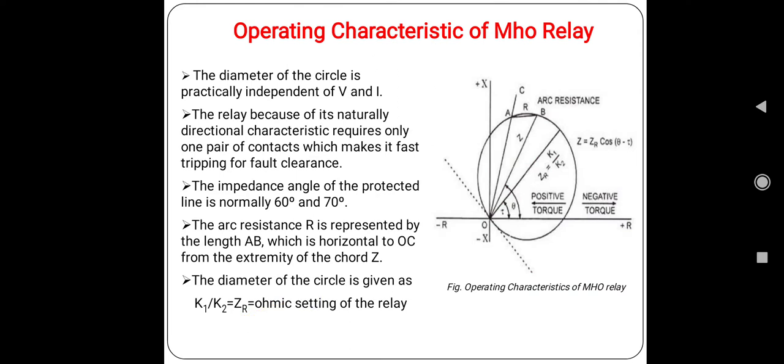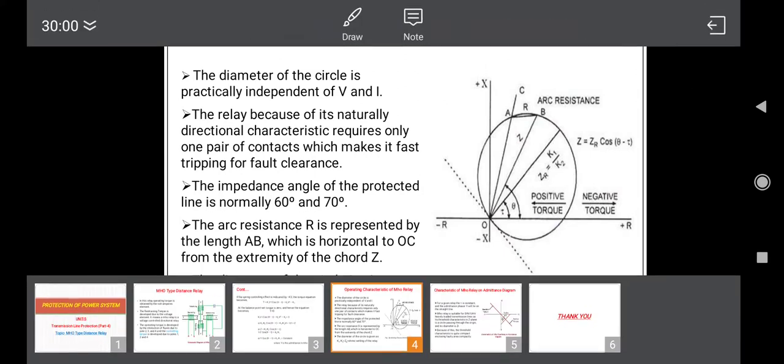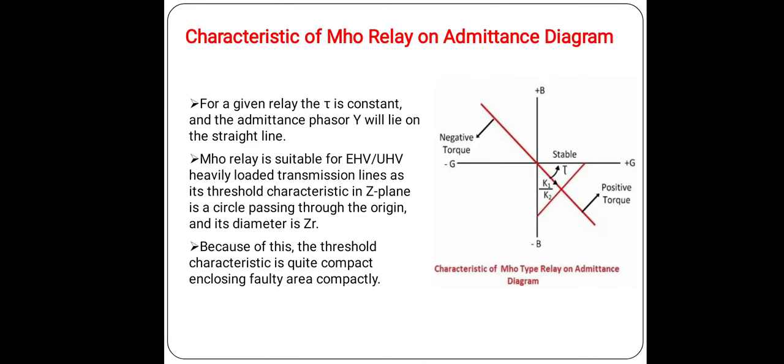Because of this, the threshold characteristic is quite compact, enclosing the fault area compactly, and hence there is lesser chance to operate during power swing, and also it is directional.